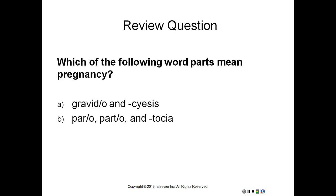And we have one review question: which of the following word parts mean pregnancy? Hopefully you are choosing A. Gravido and cyesis both mean pregnancy. Paro and parto mean bear, give birth to, labor or childbirth. And tocia means birth or labor.